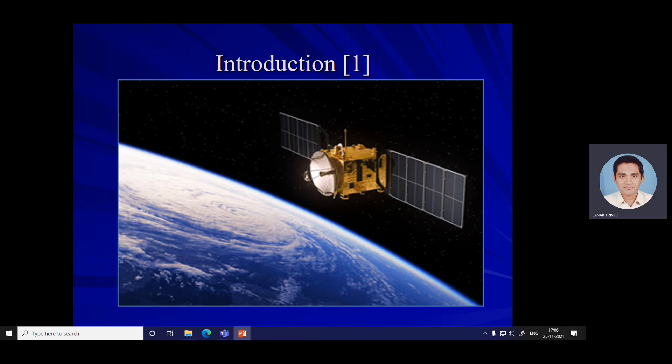A communication satellite is an artificial satellite that transmits the signal via transponder by creating a channel between the transmitter and the receiver located at different locations on the Earth. Telephone, radio, television, internet, and military applications use satellite communication.